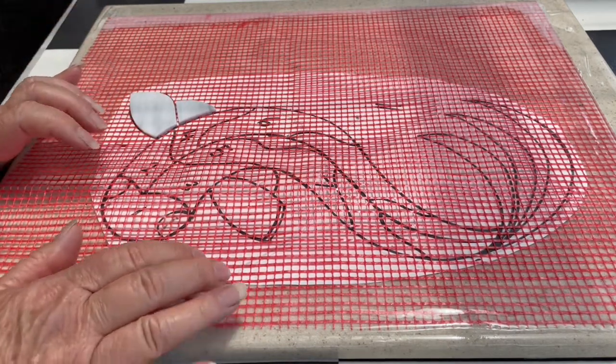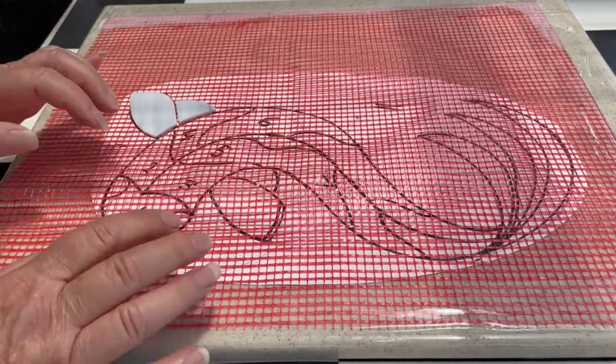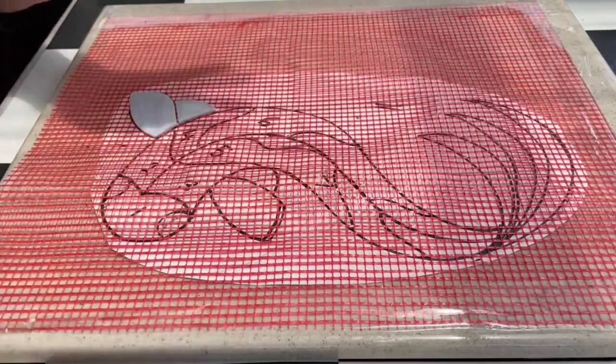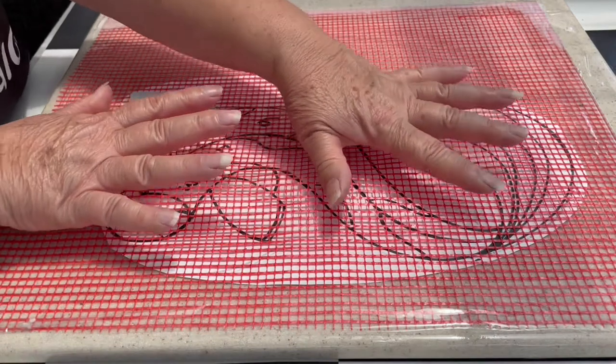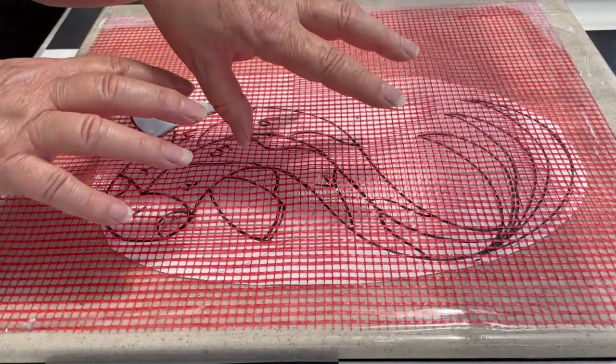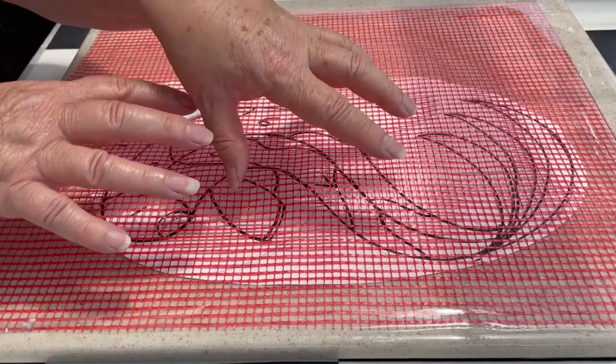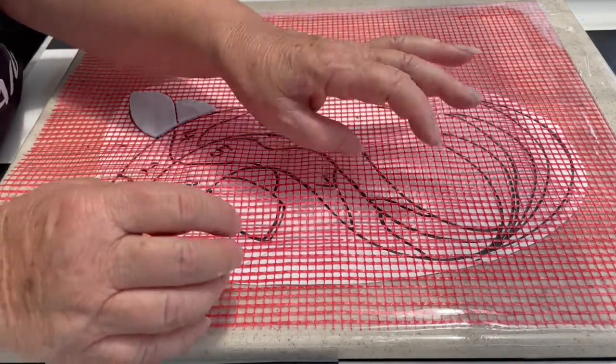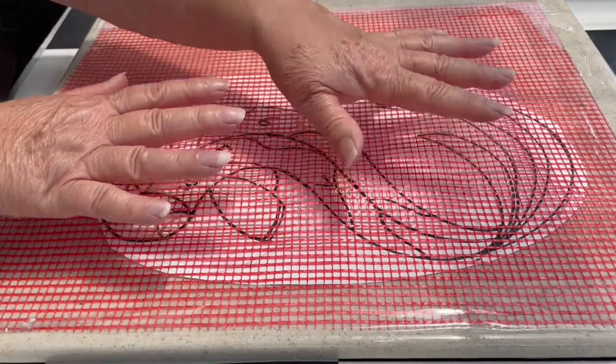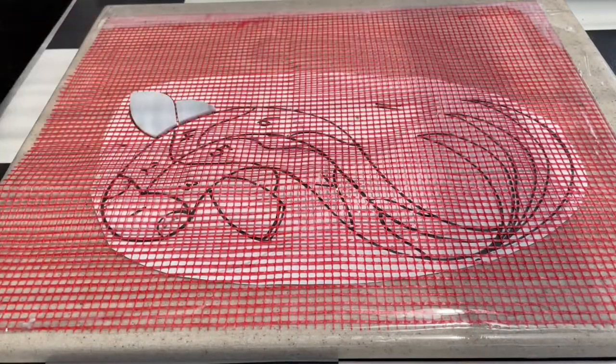The other great thing about using this method is when you start to place your pieces, you can ease them where you need them to go. And your pattern will change as you ease things. So don't get too bent up or stressed about, oh my God, I didn't cut it exactly on the line. Because you can just sort of wiggle it into good shape. And I'll go over that with it.